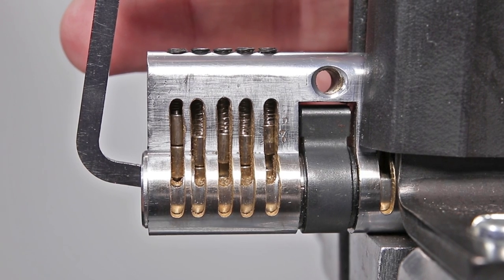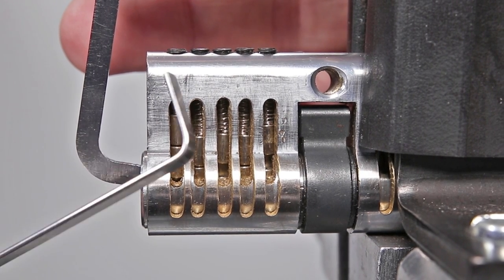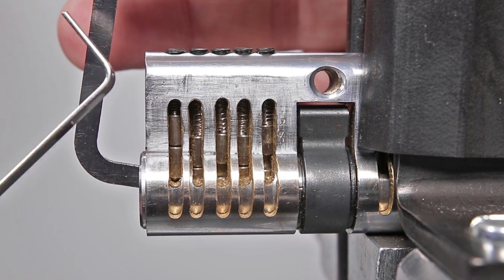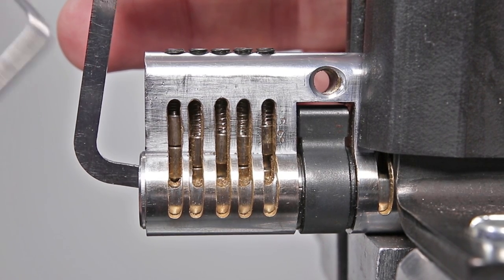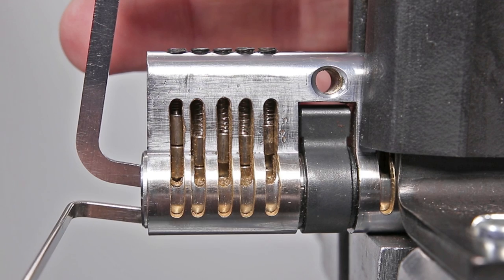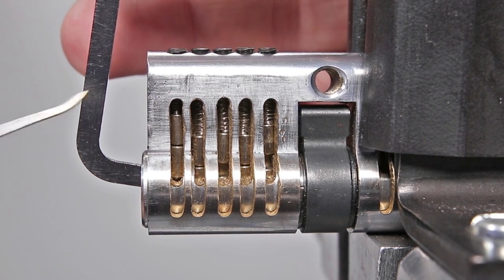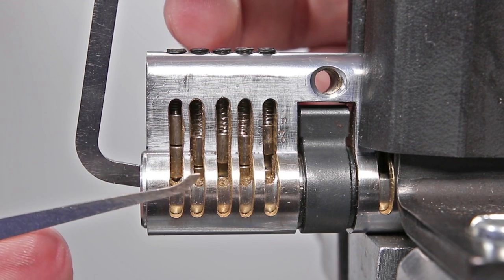If you are utilizing top of the keyway tension, I highly recommend you use bottom of the keyway tension as an alternative because you can easily drop your top of the keyway tensioner during this. If you are going to use bottom of the keyway tensioner, make sure you insert it and tension in the same direction that you are already tensioning so you do not drop all of your pins.